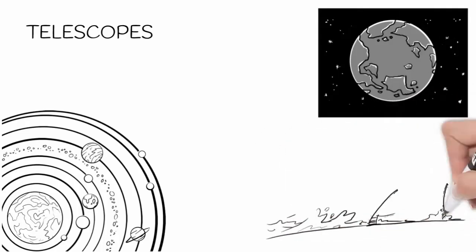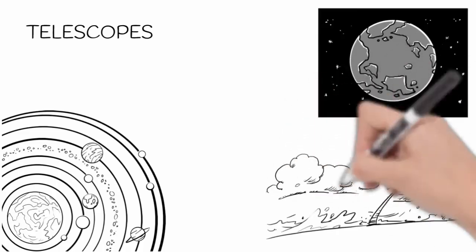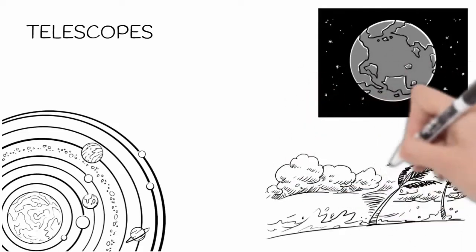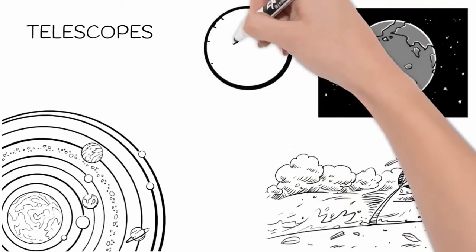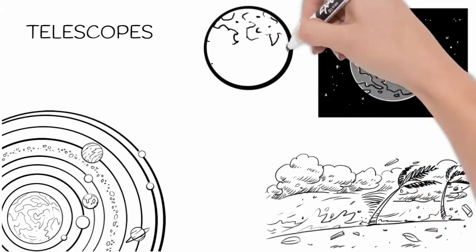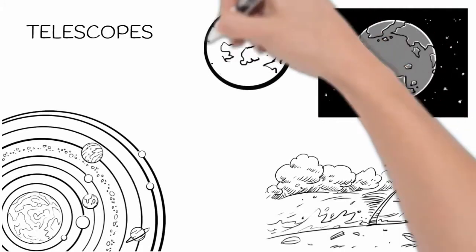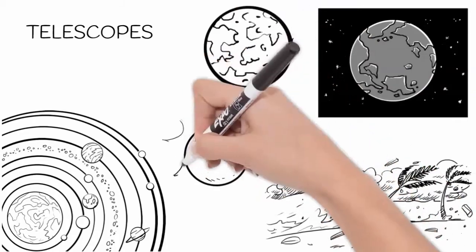Telescopes have revealed weather patterns and the geography of landscapes on other planets. They have revealed the presence of new planets and asteroids, and helped us develop an understanding of gravity and orbits.